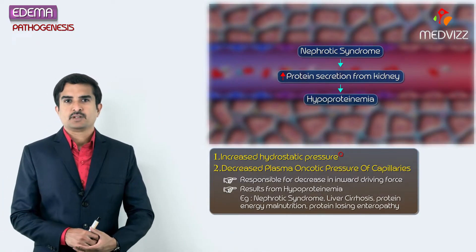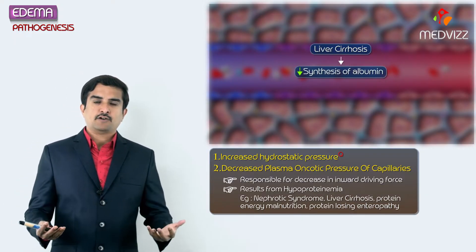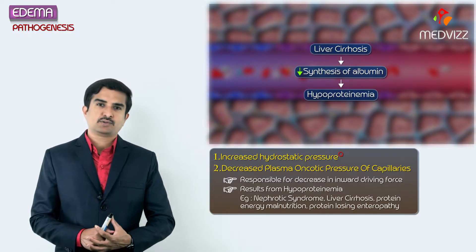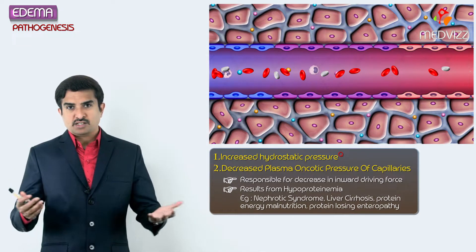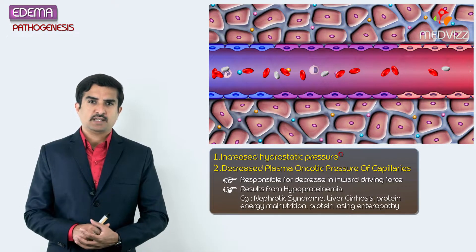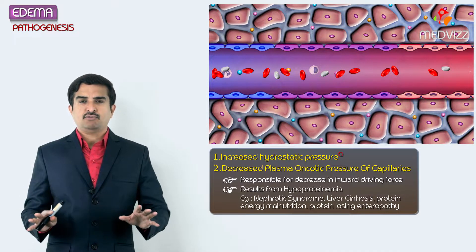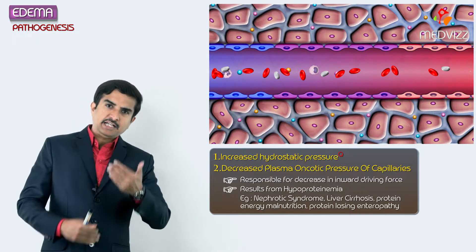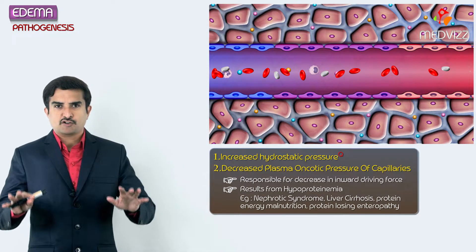Hypoproteinemia is also seen in liver cirrhosis, where the synthesis of albumin by the liver decreases. Additionally, it may be due to protein energy malnutrition, which is acquired in nature, or in conditions like protein-losing enteropathy. All conditions associated with decreased protein synthesis, excretion of protein, or decreased intake of protein lead to decreased plasma concentration of proteins.